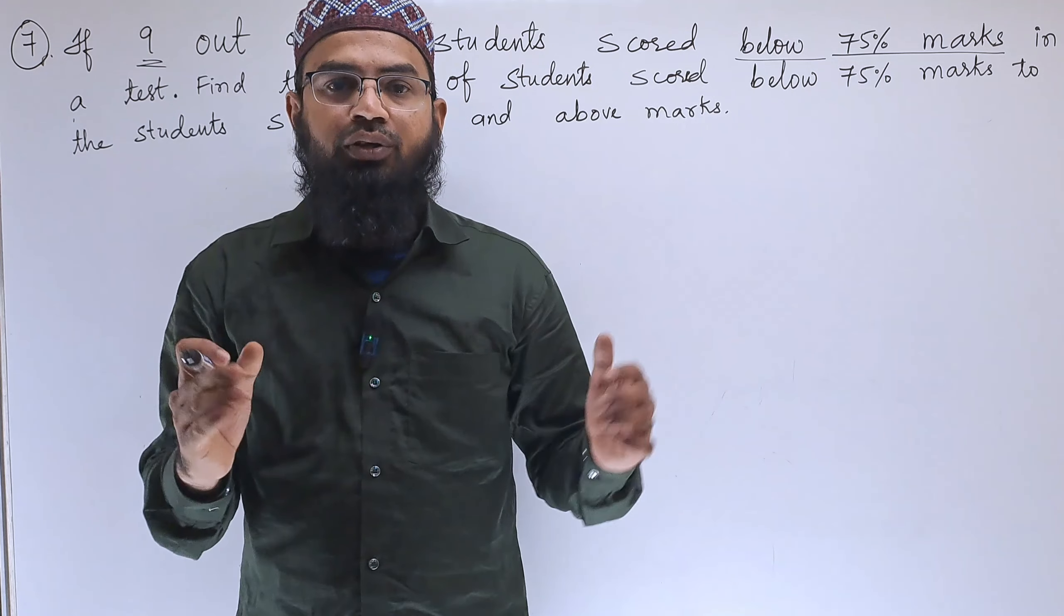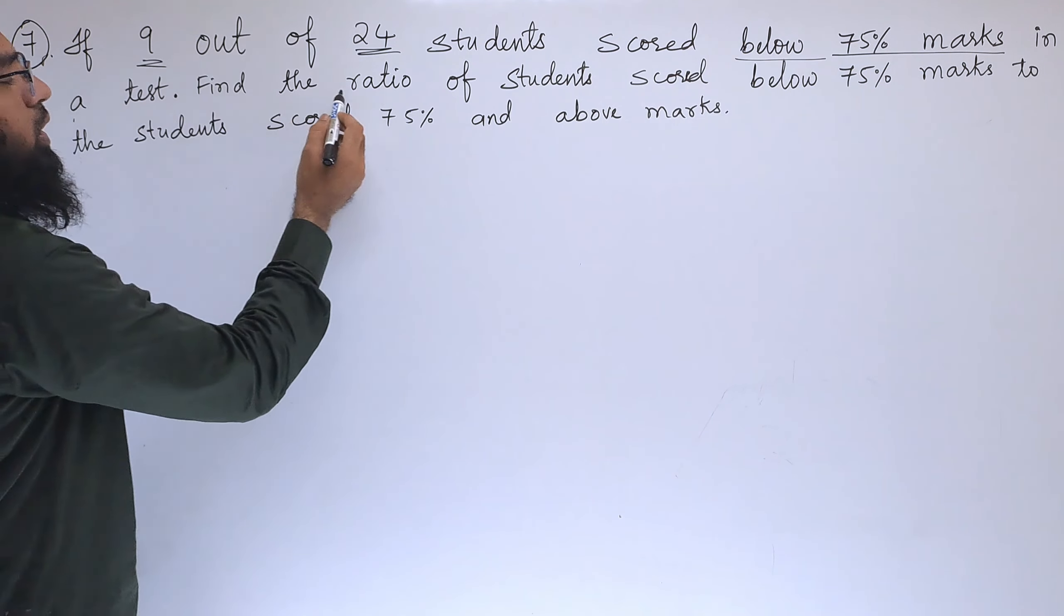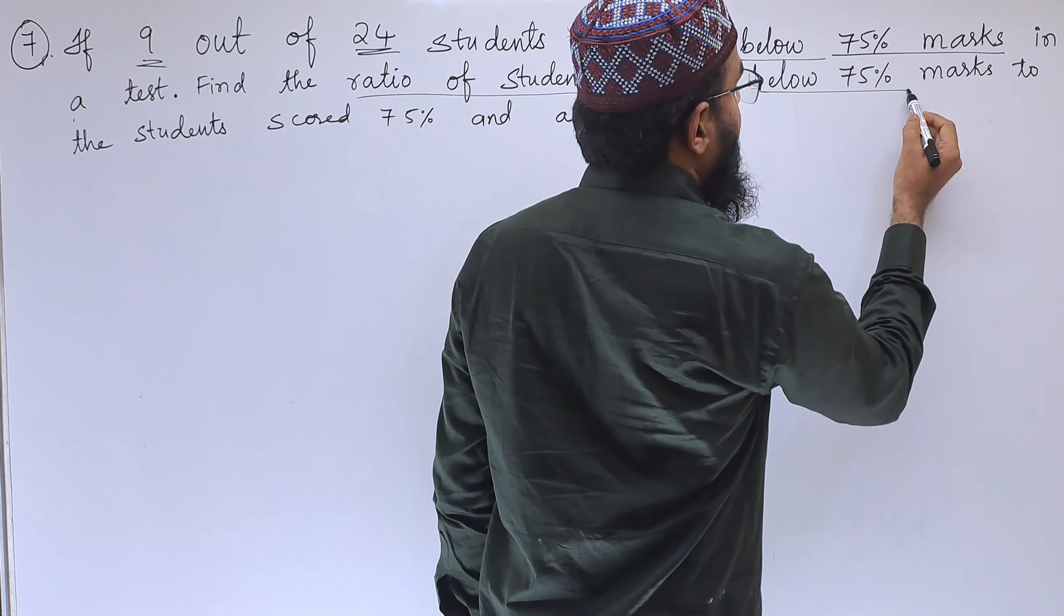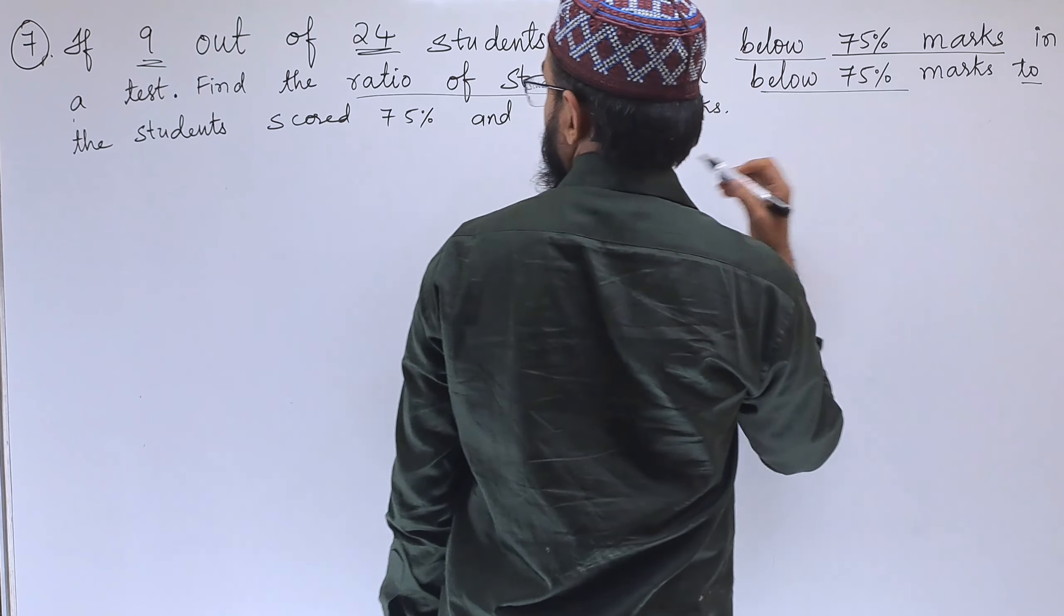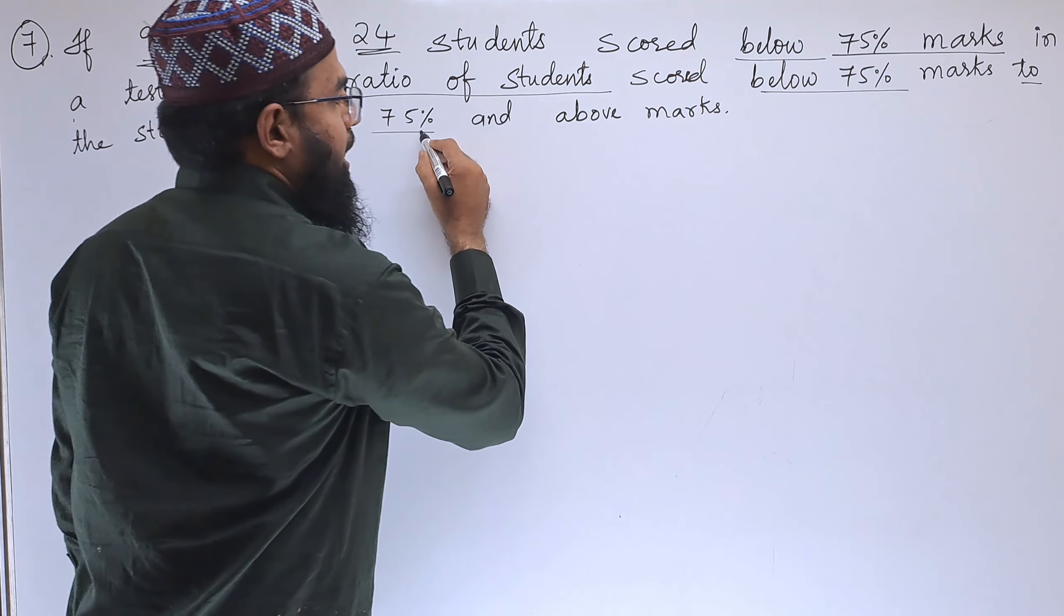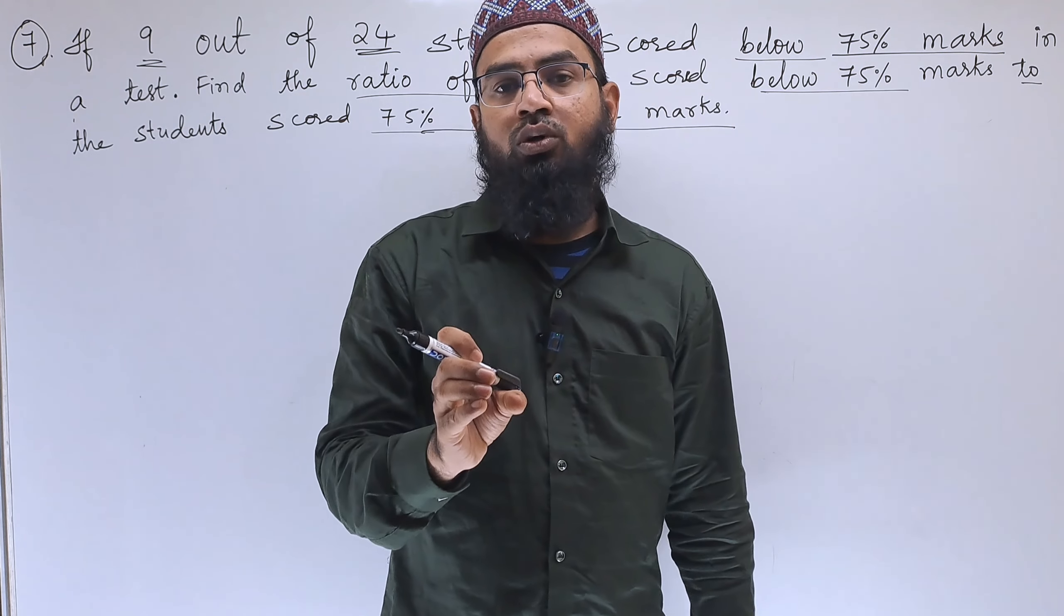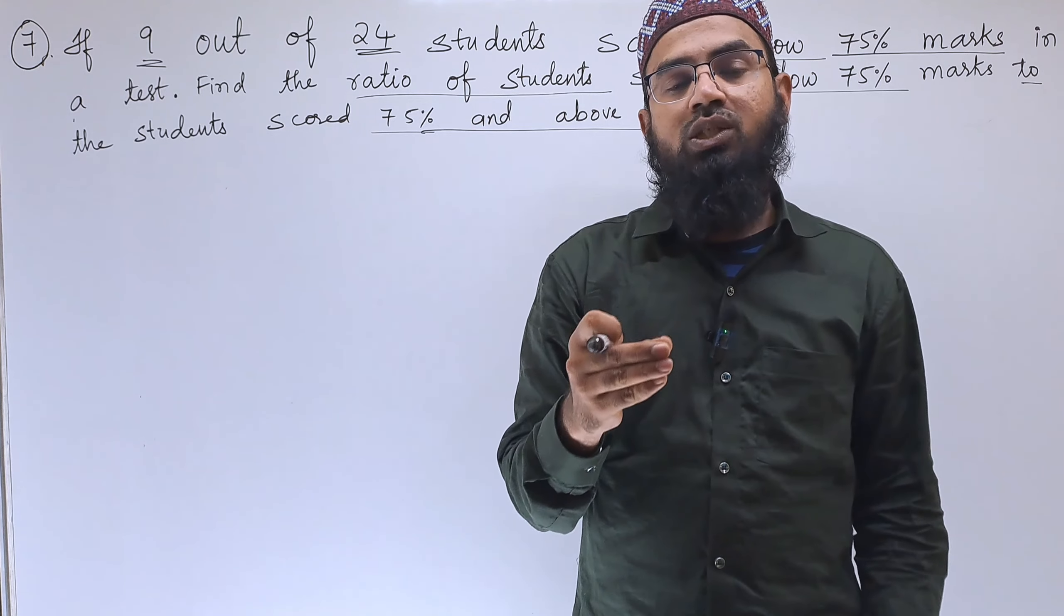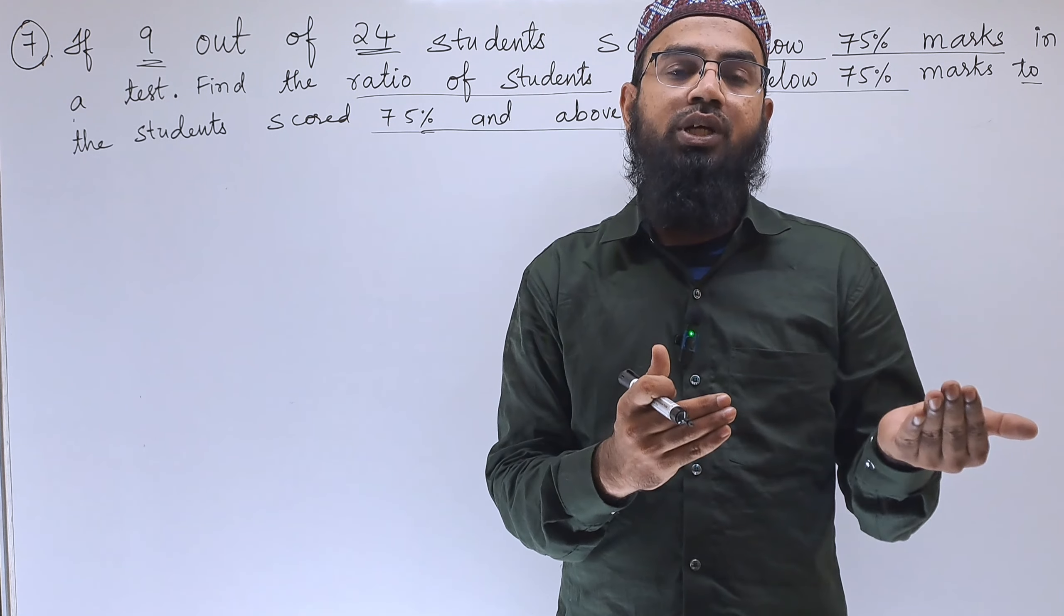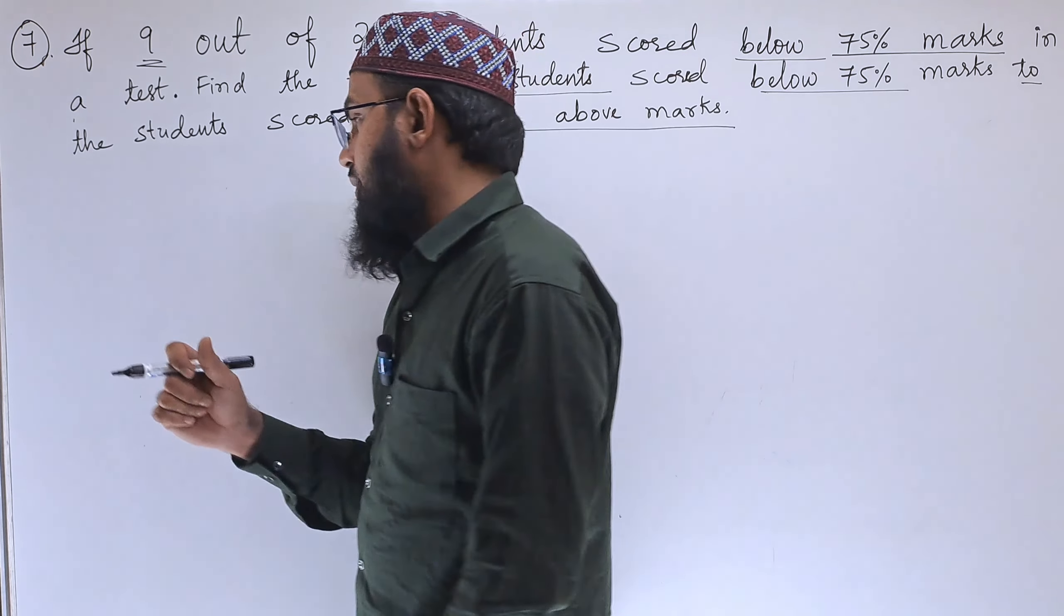In a test, find the ratio of students who scored below 75 percent to the students who scored 75 percent and above. So we need to find out the ratio of the students who are getting less than 75 percent to the students who are getting 75 percent and more than that.